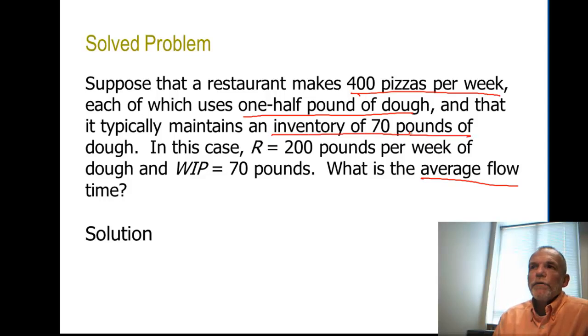So now that we know that the flow unit that we're talking about is really dough, not pizzas per week, then the rate at which we're processing pizzas is 400 per week. The rate at which we're processing dough is 200 pounds per week, and so that's our rate. We know our work in process is 70. So again, work in process equals rate times time. In this case we're solving for time.